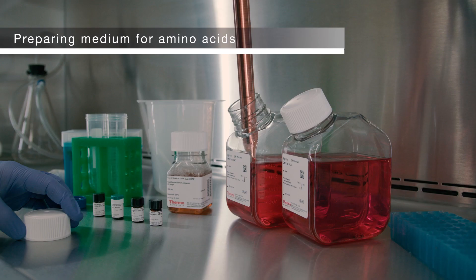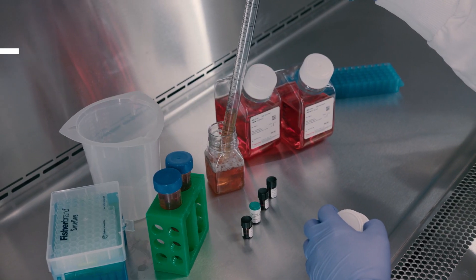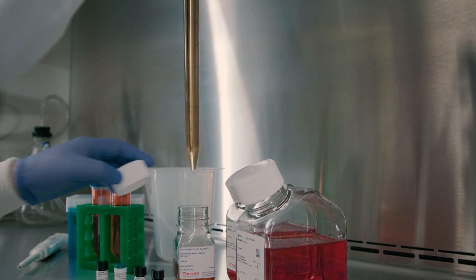The next step is to prepare the medium for the addition of the amino acids. Remove 50 milliliters of the SILAC medium from each bottle and replace it with 50 milliliters of thawed dialyzed FBS.